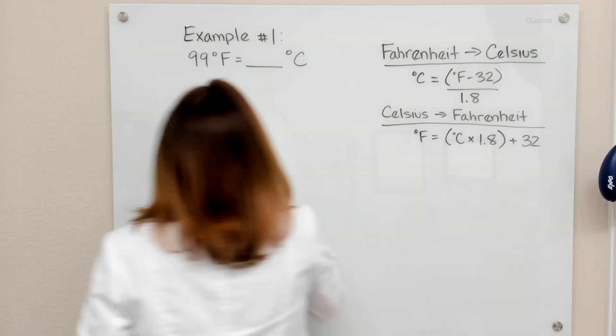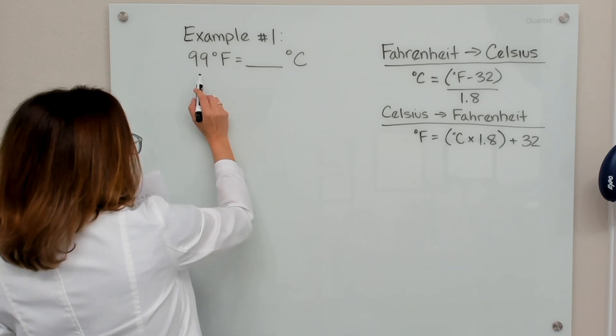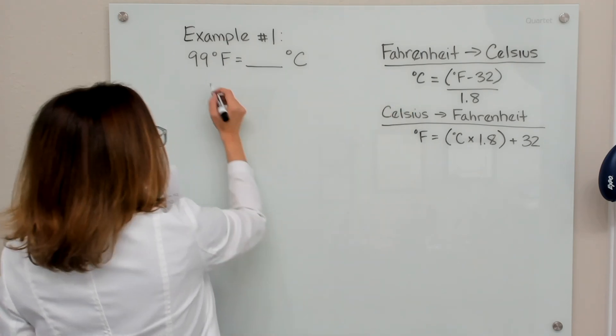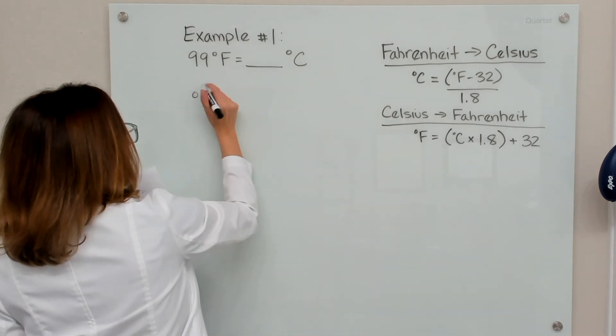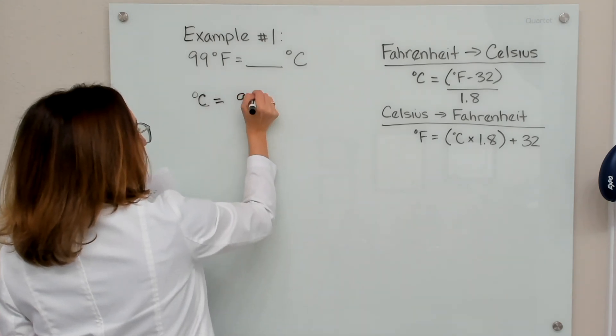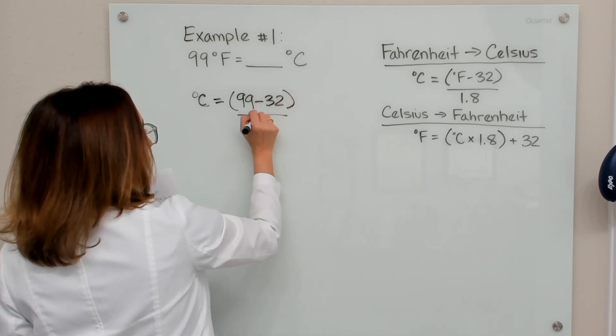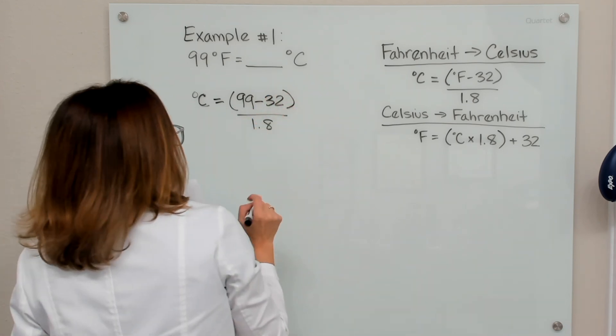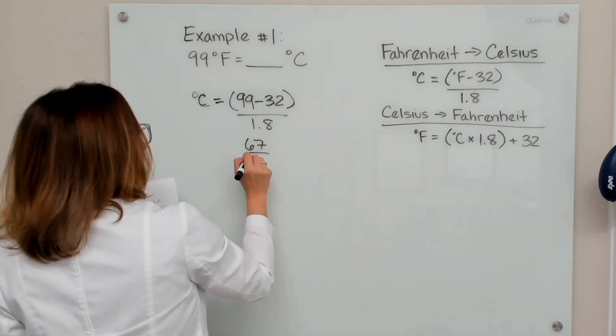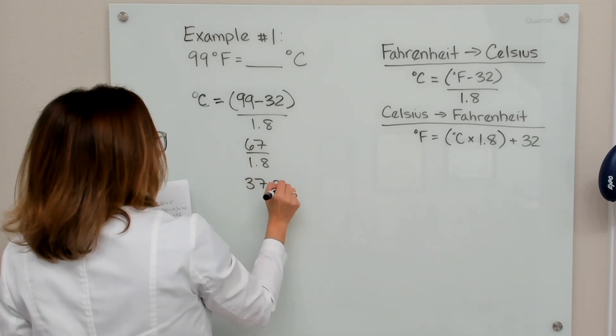So let's work through our first example problem. With this problem, we have 99 degrees Fahrenheit, and we want to get to Celsius. So we're going to be using this equation here. The degrees Celsius equals the degrees Fahrenheit, which is 99, minus 32, over 1.8. So 99 minus 32 is 67. 67 divided by 1.8 is 37.2.